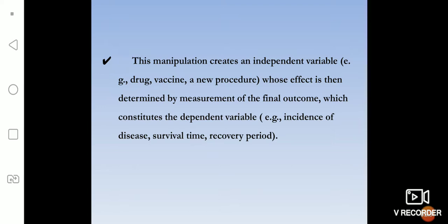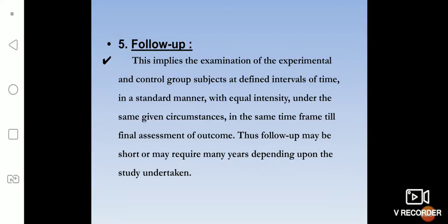The independent variable is what we manipulate and the outcome is the dependent variable. We examine what the outcome of the disease is — whether the survival rate increases, whether the person improves with the new drug, or feels better if we withdraw a particular habit. All of this is done based on what we have agreed upon in the protocol.